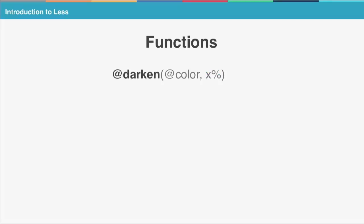You also have the function darken, which does the opposite by decreasing the lightness of an existing color. That also takes two parameters: the color object, then the amount by how much you want to decrease the lightness in percentage. You can find the full list of built-in functions supported by Less by going to the website lesscss.org, section functions.